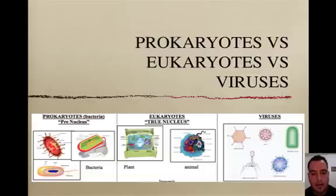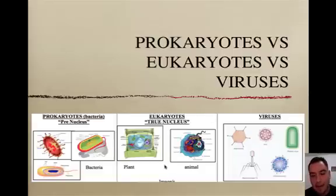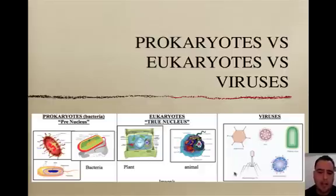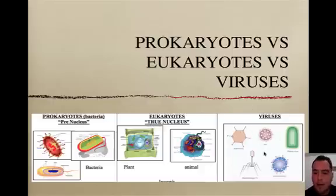Eukaryotes include fungi, animals, plants, and protists. And then you have viruses, which are not classified as alive because they don't have cells like prokaryotes and eukaryotes do. They're non-cellular or acellular.